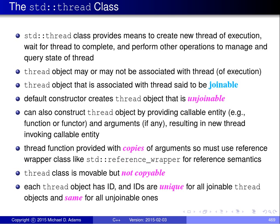Thread objects are movable but not copyable. The reason for not allowing copying is it's not clear what semantics a copy operation would have, so rather than having highly non-intuitive behavior, you're simply not allowed to copy Thread objects. Each Thread object has an identifier or ID. These IDs are unique for all joinable threads, and all unjoinable threads share essentially a dummy ID not associated with any thread of execution.